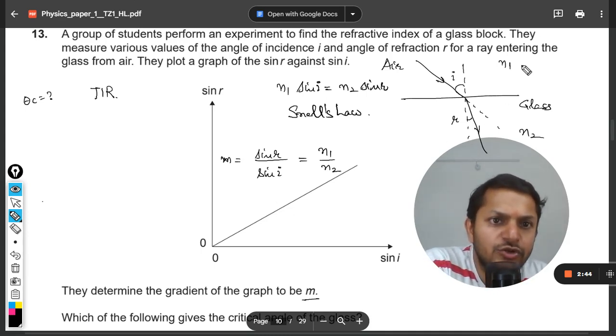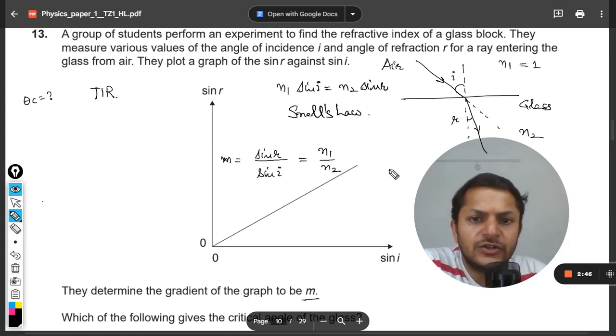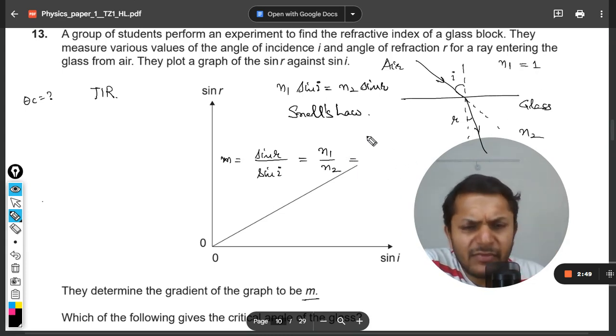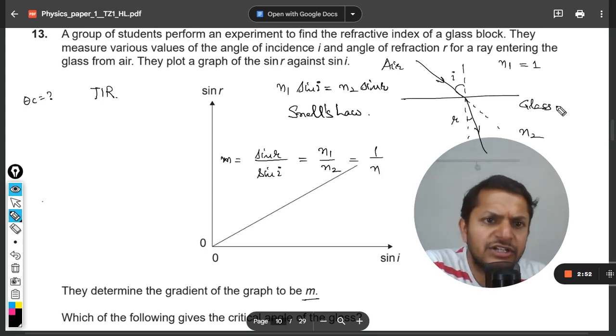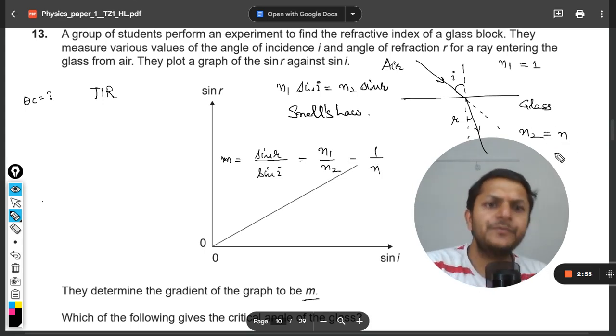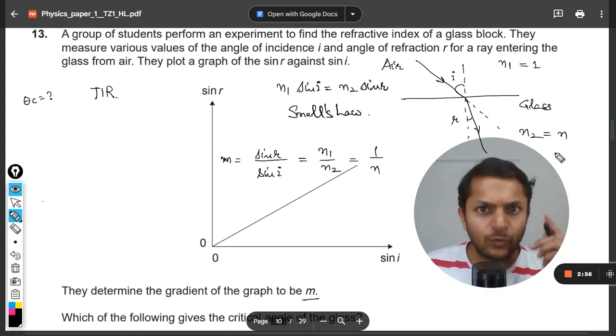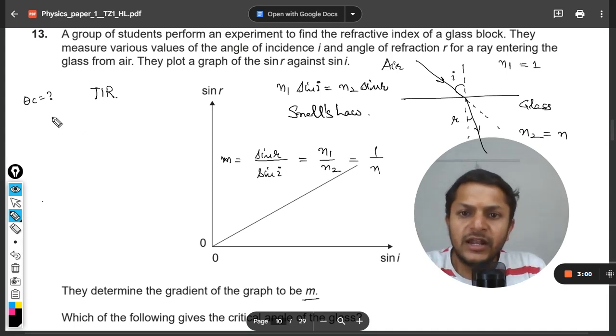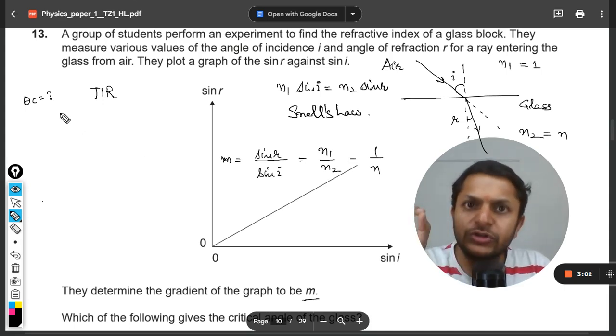Yes, so n1 by n2 is m. And for air, n1 is equal to 1, so I can substitute it here. So let us just call it 1 by n. So this n2 is taken as n and n1 is taken as 1, so I'm just calling it like this. So this is the slope m.